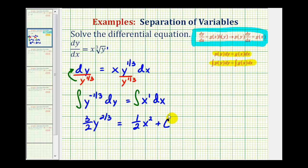And now we want to solve this equation for y. So to start, let's go ahead and multiply both sides of the equation by the reciprocal of three-halves, which would be two-thirds.